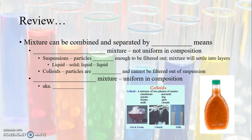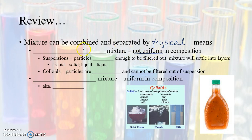A quick review from a couple of chapters ago where we talked about mixtures. A mixture can be combined and separated by physical means. There are two types of mixtures: one that's not uniform in composition — not the same throughout — and that would be a heterogeneous mixture.